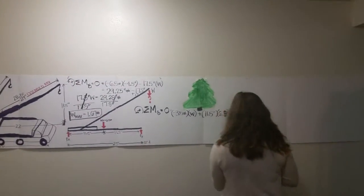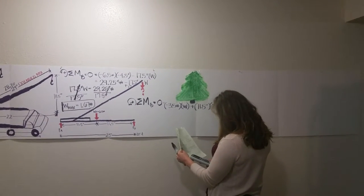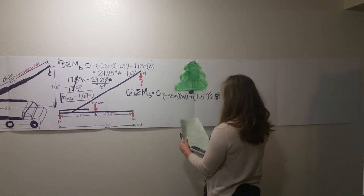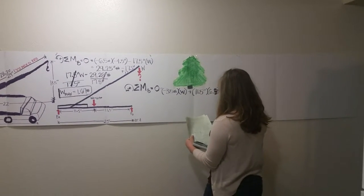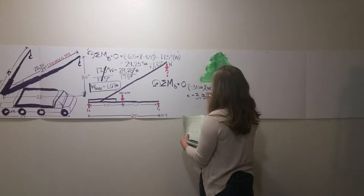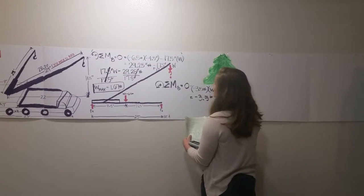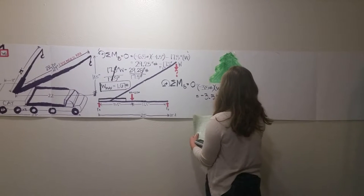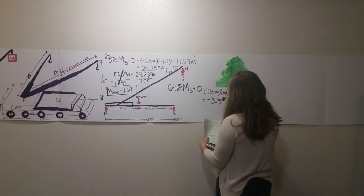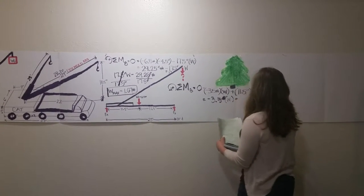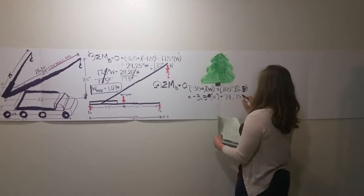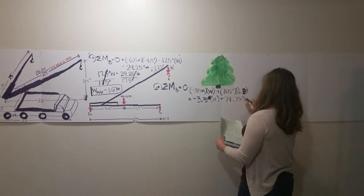So calculating, this would be negative 3.5 inches times W plus 74.75 inch-pounds.